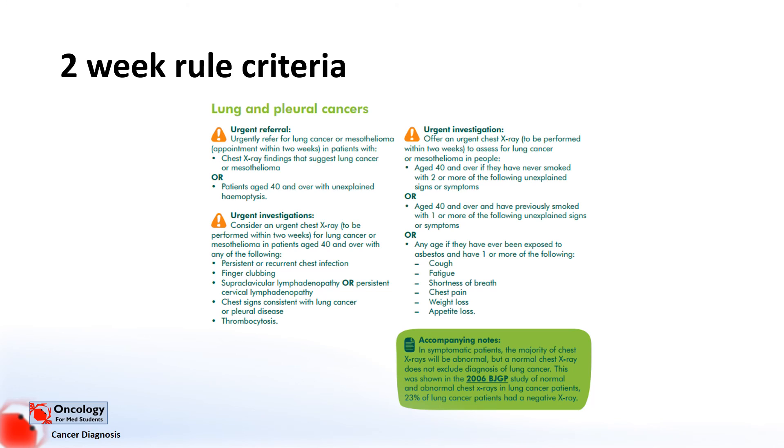To finish, I thought I'd mention the two-week rule criteria. These are a list of signs and symptoms that should alert GPs into suspecting that there might be an underlying cancer in a patient. If they see any of these signs and symptoms they should refer the patient to the relevant specialty and they should be seen within two weeks. If we look closely at the two-week rule criteria we can see some examples of the symptoms that we've been talking about in this video.